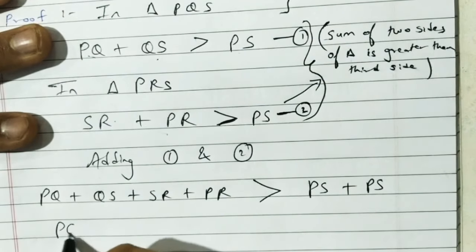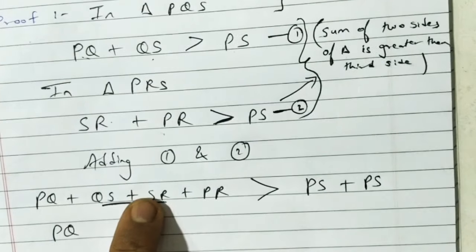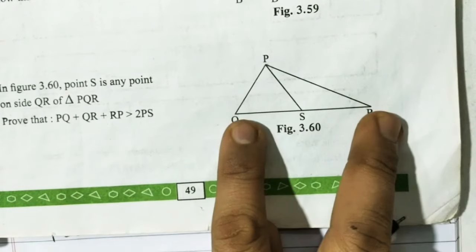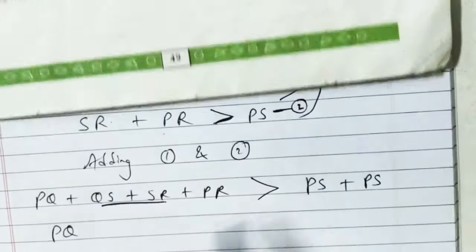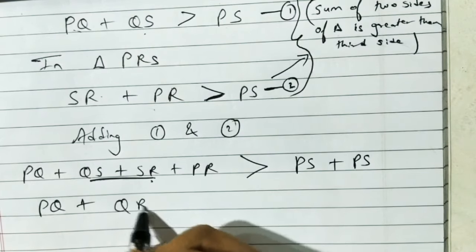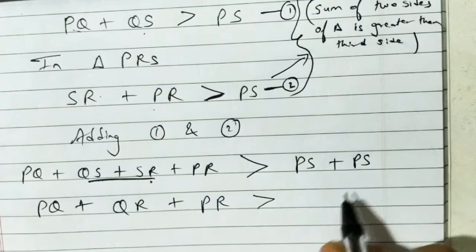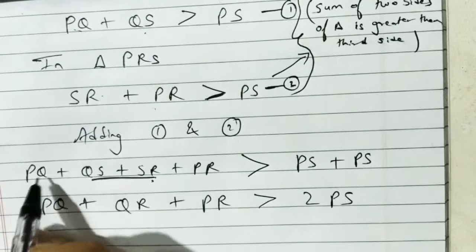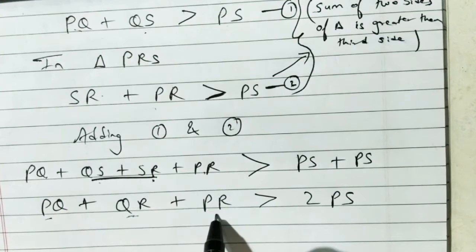Next step: QS and SR together equal QR. So PQ plus QR plus PR is greater than PS plus PS, which is twice PS. That is exactly what we needed to prove. PQ as written, QS plus SR becomes QR, and PS plus PS is twice of PS.